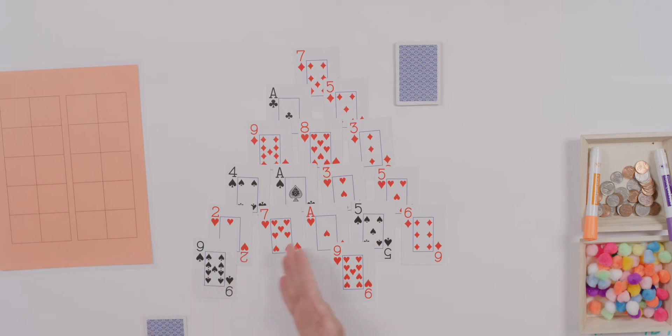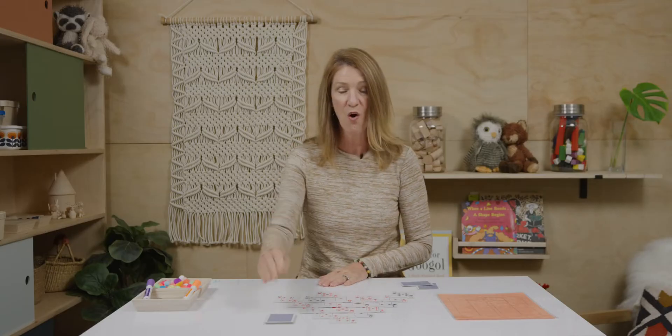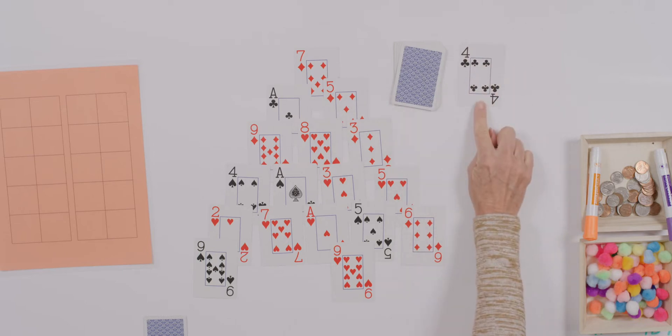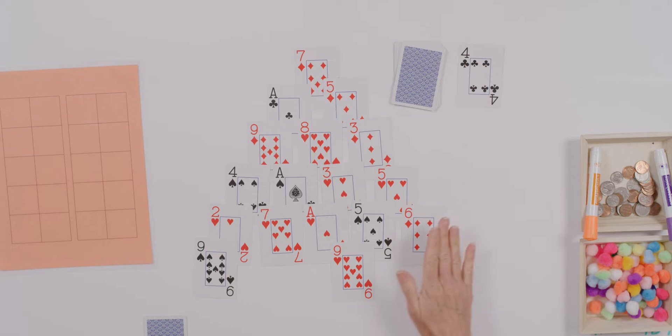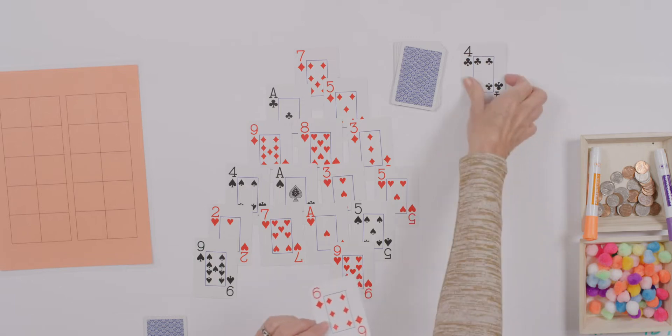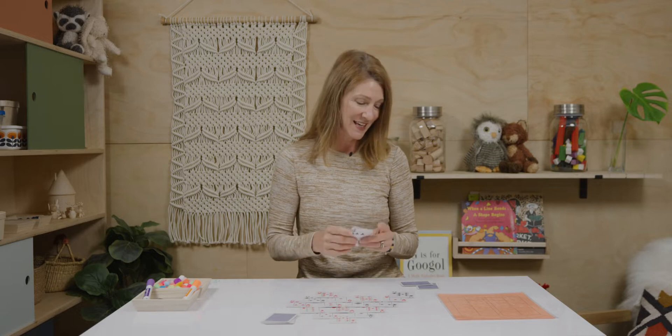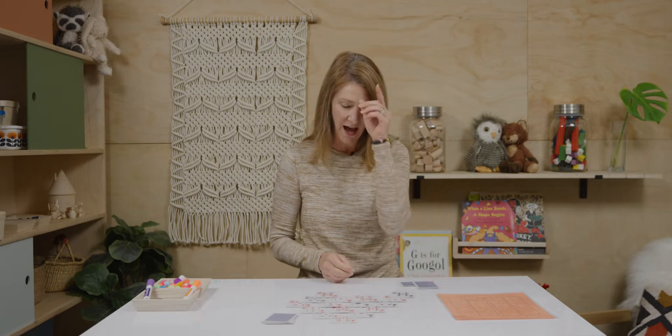When I look at these cards that are exposed, I have this card, this card, this card, and this card that we can say are exposed. Do any of those cards make ten? If you said no, you're right. So I'm going to go to my pile and turn over a card. Does this card help me make ten with any of the cards I have laid out before me?